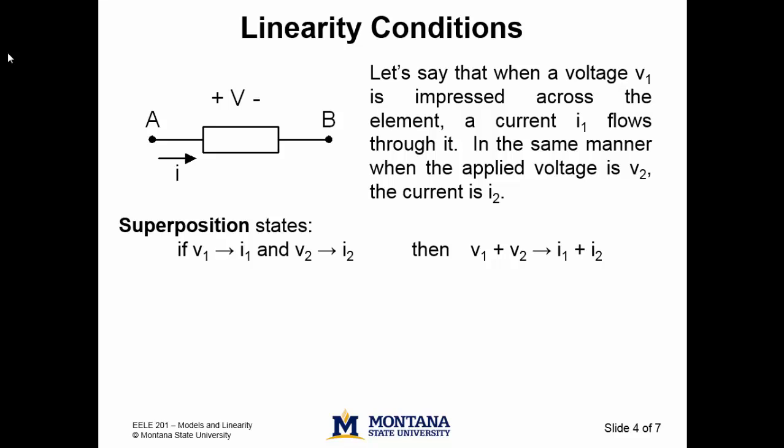Superposition takes these two cases just described, that is, if V equals V1, then I equals I1, and if V equals V2, then I equals I2, and reveals that if V is now equal to V1 plus V2, then I must equal I1 plus I2. On to the second necessary condition for linearity.